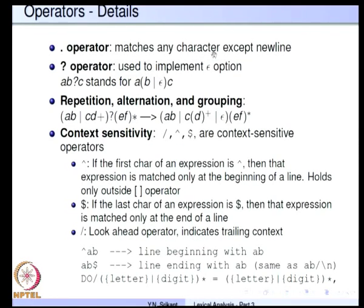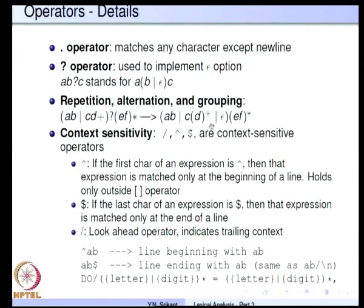The dot operator matches any character except newline. The question mark operator implements the epsilon or null string option — for example, AB?C stands for A followed by B or epsilon, followed by C. We also have repetition, alternation, and grouping using ordinary parentheses. For example, (AB|CD+)?EF* means AB or CD+ optionally, followed by EF repeated zero or more times. This is the lex notation for these regular expression operators.